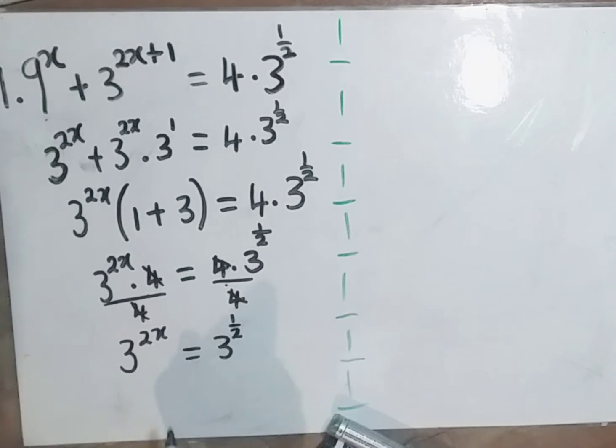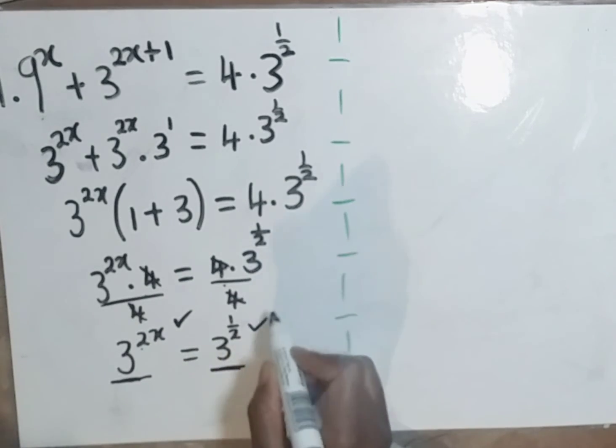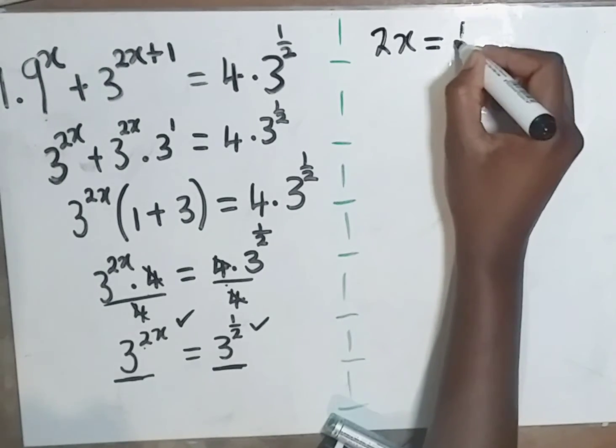Now since this is 3 to the power 2x is equal to 3 to the power half, we'll ignore these bases, we'll ignore these 3s, and then we'll check the powers only. We'll only look at the powers. Then we'll say 2x is equal to half.